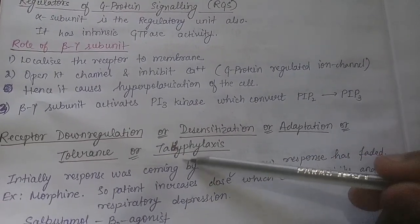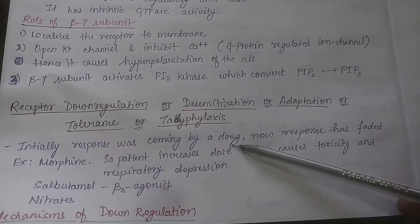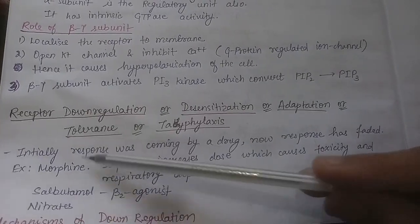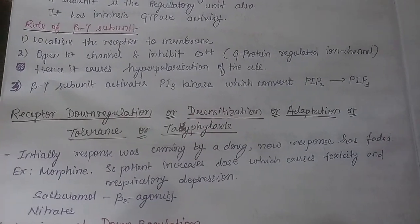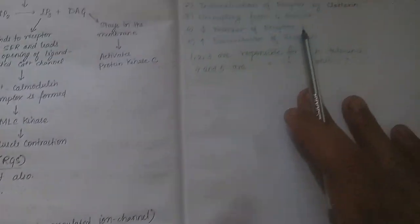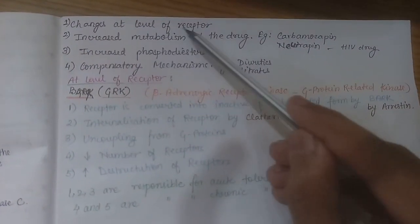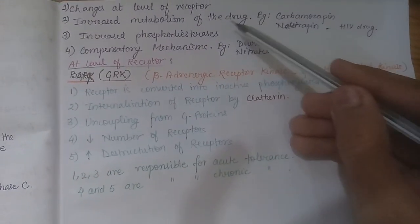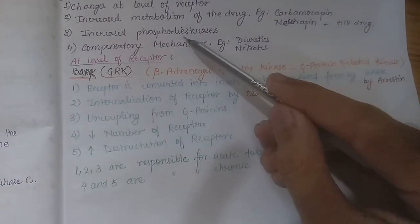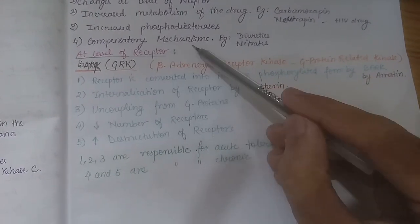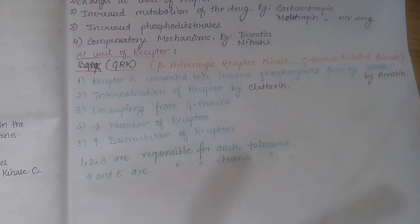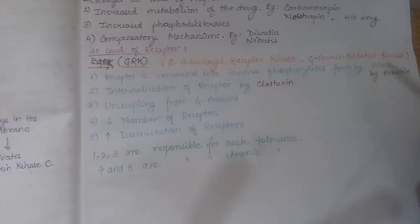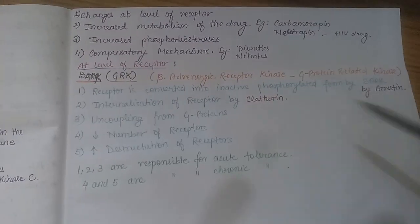Now we will cover receptor downregulation, also known as desensitization, adaptation, tolerance, or tachyphylaxis. Initially a response is seen from a drug, but then the response fades - that is downregulation or desensitization. Examples include morphine, salbutamol, and nitrates. Mechanisms behind desensitization include: changes at the level of receptors, increased metabolism of the drug (requiring dose increase), increased phosphodiesterase enzyme activity converting cyclic AMP back to ATP, and compensatory mechanisms such as RAS system activation with diuretics.